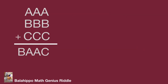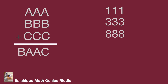The question is to add up three three-digit numbers to get a new four-digit number. That is: AAA plus BBB plus CCC equals BAAC. For example, while A equals 1, AAA equals 111; B equals 3, BBB equals 333; and C equals 8, CCC equals 888. Adding these three numbers gives the four-digit number 1332. Note: 1332 is just an example — it is not our answer.